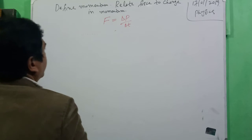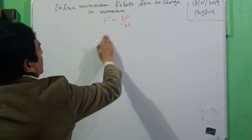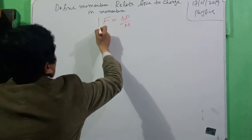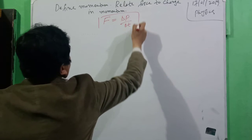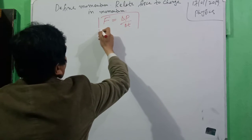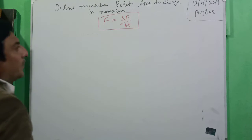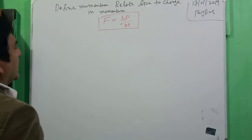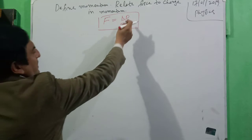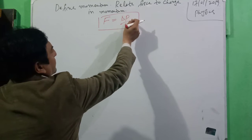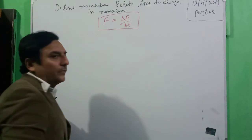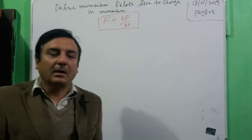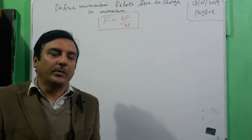Now we derive the equation. What is the meaning of this equation? Force is the rate of change of momentum. What is force? It is the rate of change of momentum. What does force do? Force changes the momentum of a body.